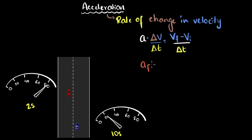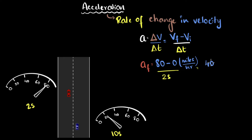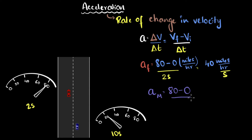So let's calculate quickly what will be their acceleration. The acceleration of the Ferrari would be the final velocity of the Ferrari — that is 80 miles an hour — minus the initial value, which started from zero, divided by two seconds. That gives us 40 miles per hour per second. And similarly, the acceleration of my car: even here the change in velocity is the same, it goes from zero to 80, but it takes about 10 seconds to do that. So that gives us about eight miles per hour per second.